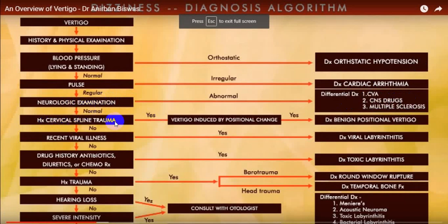If vertigo is induced by position, it is BPPV. Ask about recent viral illness — if yes, labyrinthitis. If no, ask about drug history — antibiotics, diuretics, chemotherapy — if yes, toxic/drug-induced labyrinthitis. If no, ask history of trauma — barotrauma or head trauma. If hearing loss is present, consult further. If no hearing loss and vertigo is of severe intensity, try to identify Meniere's, acoustic neuroma, toxic labyrinthitis, bacterial labyrinthitis, or other causes producing damage to the vestibular apparatus.